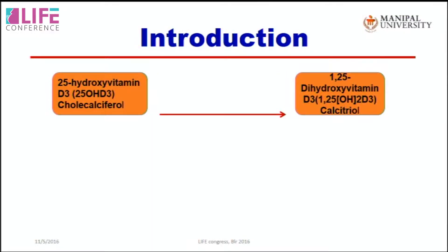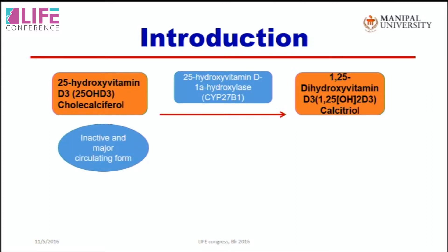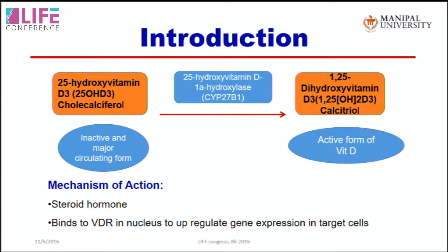The active form of vitamin D is calcitriol. The inactive or major circulating form is converted to the active form by another enzyme. Since it is a steroid hormone, it binds to the receptor in the nucleus and changes gene expression in the target cell — the ovary being one of those target cells, where genomic activity is changed by vitamin D.